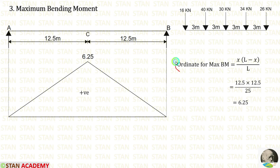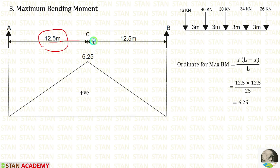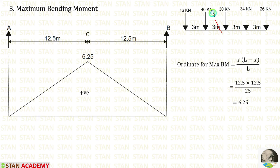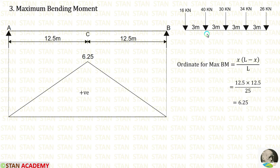Now let us calculate the maximum bending moment. We know the formula for the ordinate: x × (L minus x) / L. With x = 12.5 meter and total length 25 meter, we get 6.25. Now we have to keep these loads in the beam. We may have some confusion about which load to keep at point C — for that, we have to find the critical load. We can assume 30 kN is the critical load, as it is in the center of all the loads. We have to keep 30 kN on the left and right of point C and calculate the differential loading rate. If we get a change in sign, 30 kN is the critical load; otherwise, we try another load.